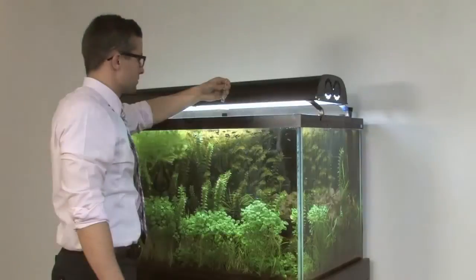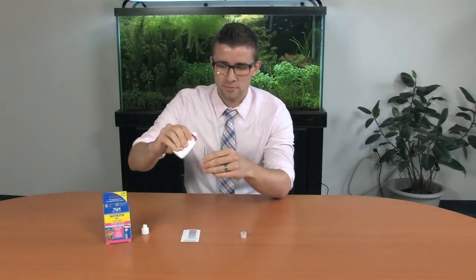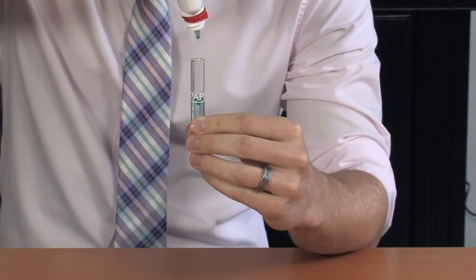Begin the test by taking a water sample from the aquarium. Fill the test tube to the line. Holding the bottle of test solution in an upright position, add five drops to the test tube.